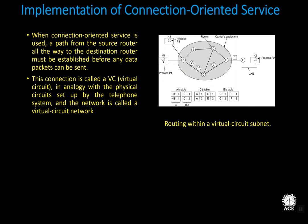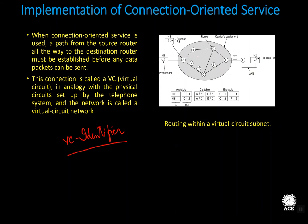For connection-oriented service, before starting to send data, a path — called a virtual circuit — is established from source to destination. A path from the source router all the way to the destination router must be established before any data packets can be sent. This is analogous to physical circuits set up in the telephone system, and the network is called a virtual circuit network.